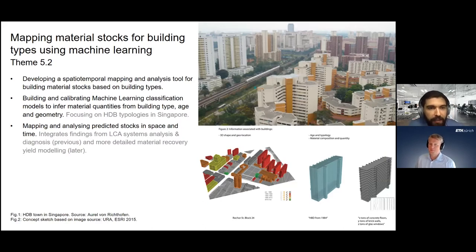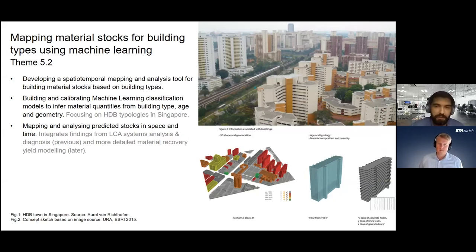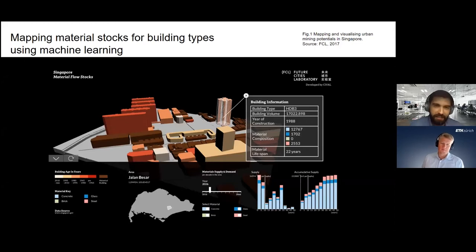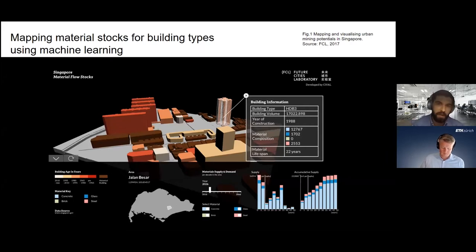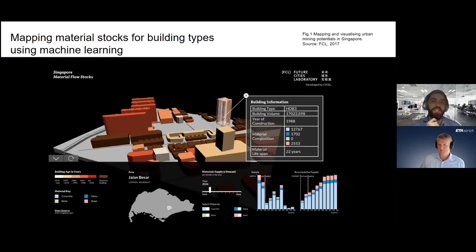With these models, the resulting values can be mapped and analyzed to predict stocks in space and time — a geospatial tool to explore this four-dimensional data. This will integrate findings from the life cycle assessment and systems analysis, as well as detailed material recovery yield models discussed later. The idea is to create a smarter, data-driven tool where you can see where the stocks are, what the information is, and when particular materials will be made available.